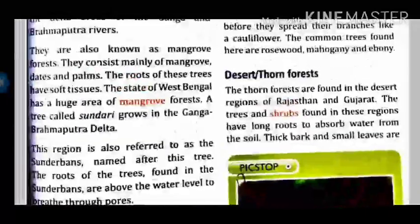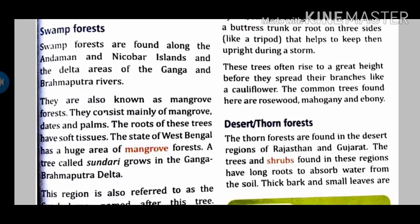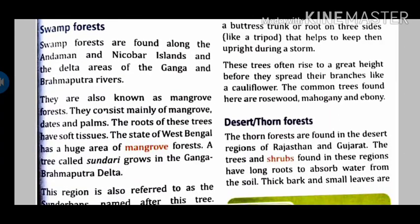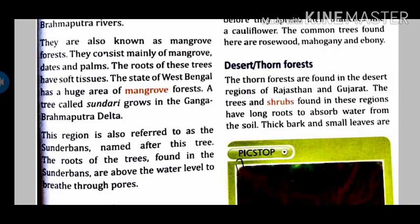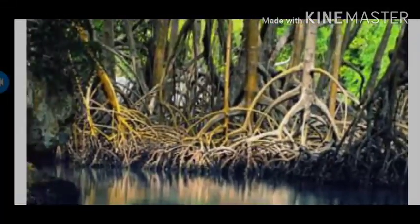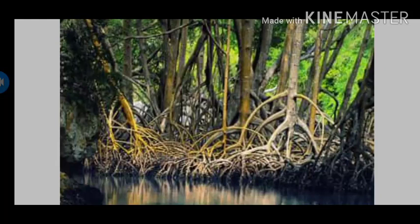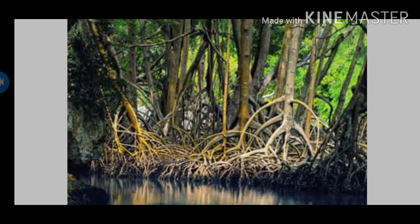Now the third type of forest — swamp forest, also called marshy forest. These are generally located in the area of deltas, such as the Andaman and Nicobar Islands and the delta of the Ganga and Brahmaputra. They are also known as mangrove forests. These mangrove forests contain sundri trees. You can see their roots here — the roots are outside the water level because they need to breathe from the roots.